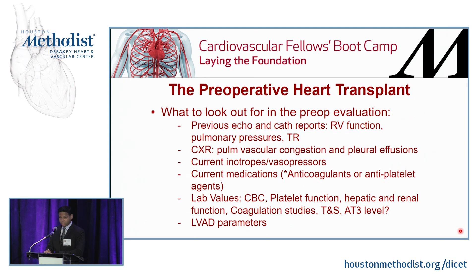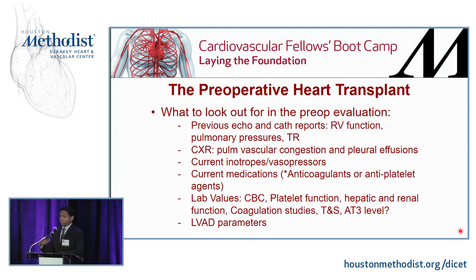In addition to standard cardiac pre-op, specifically focus on RV function, PA pressures, and severe TR. On the chest x-ray, check for large pleural effusions—that's going to play a role when it's time to induce, as FRC will be severely reduced and the patient may not be able to lay flat. Look at inotropes and vasopressors. Most patients are on some form of anticoagulation, so find out how much, check coagulation studies, when they stopped it, and discuss with your surgeon the plan for reversing or proceeding without reversing.